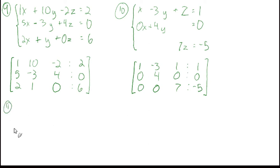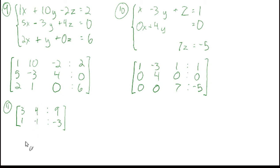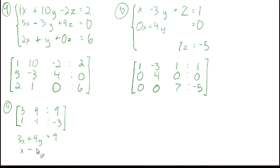Let's go to number 11 — we'll go the other way. We're given the augmented matrix and we'll write the system of equations. The variable names are somewhat arbitrary — we could use x, y, a, b, q, z — but since we're accustomed to it, we'll use x and y. So 3x plus 4y equals 9, and 1x minus 1y equals negative 3. We're just going the other way, seeing the relationship between a system of equations and its augmented matrix.